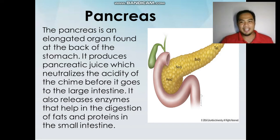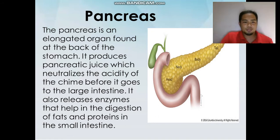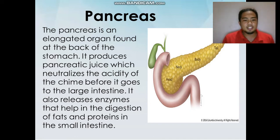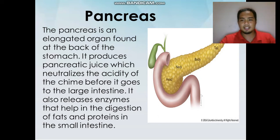Next, we have the pancreas. It is an elongated organ found at the back of the stomach and it produces pancreatic juice which neutralizes the acidity of the chyme before it goes to the large intestine. It also releases enzymes that help in the digestion of fats and proteins in the small intestine.